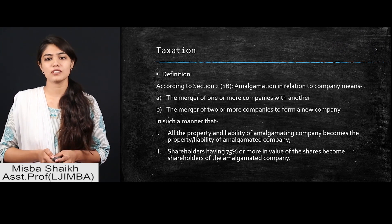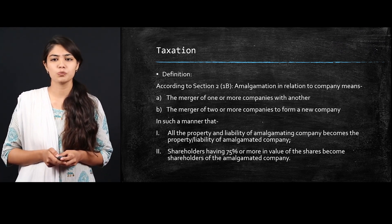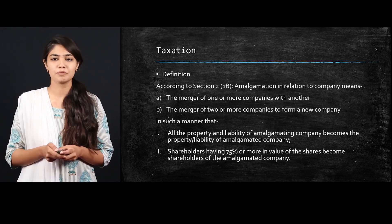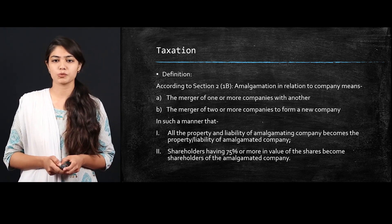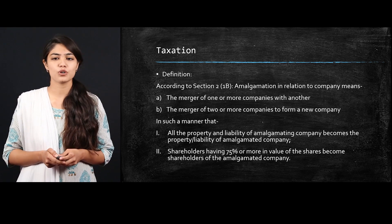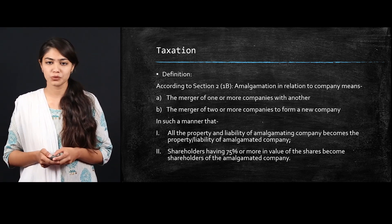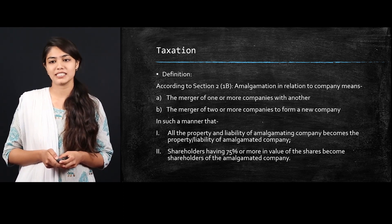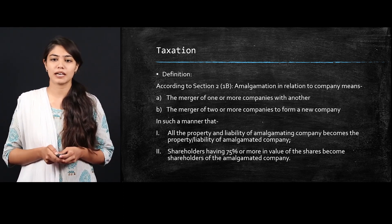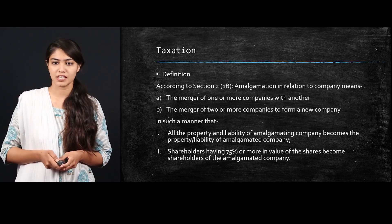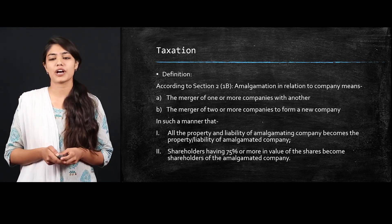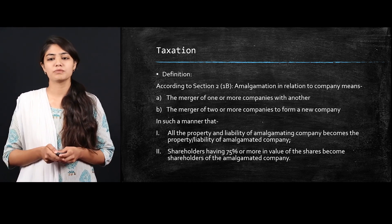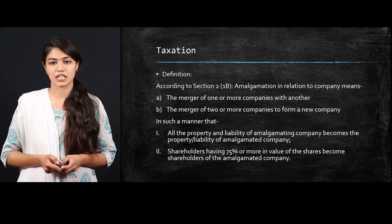Under the Taxation Laws, according to Section 2.1.B, amalgamation in relation to a company means the merger of one or more companies with another, or the merger of two or more companies to form a new company, in such a manner that all the properties and liabilities of the amalgamating company become the property or liability of the amalgamated company. Shareholders having 75% or more value of shares become the shareholders of the amalgamated company.